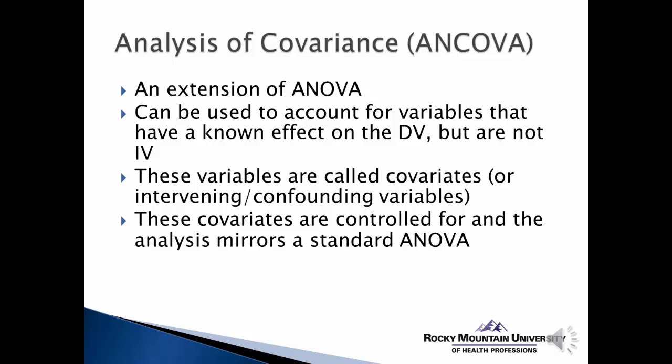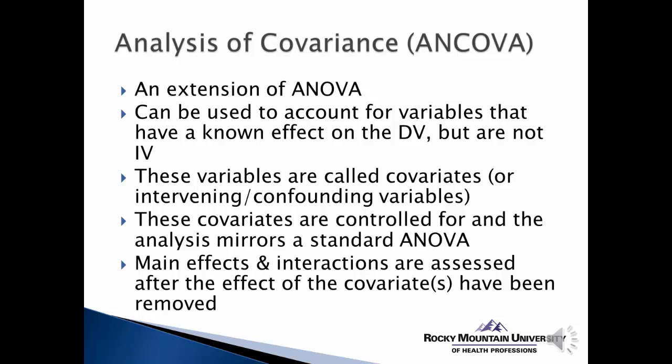What the analysis will do is control for the effect the covariates have — it basically takes out the effect that these variables might have on the outcome, and then the analysis mirrors a standard ANOVA. We get F-ratios, and we're still able to interpret the effect of one or more independent variables on a dependent variable. We can study the main effects of different factors, and we can also look at interactions between factors if we're talking about a factorial ANCOVA. These effects are assessed after the effect of the covariate has been removed or eliminated.